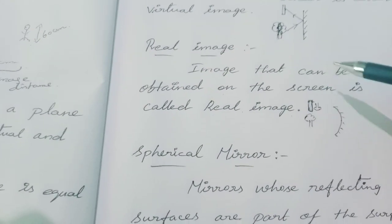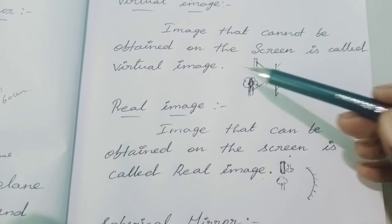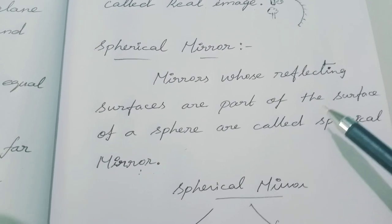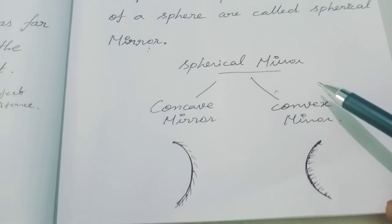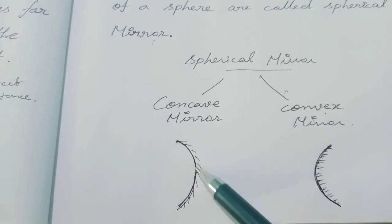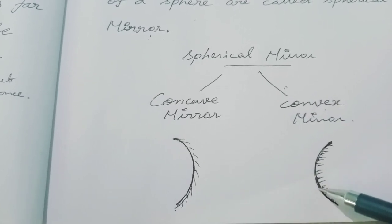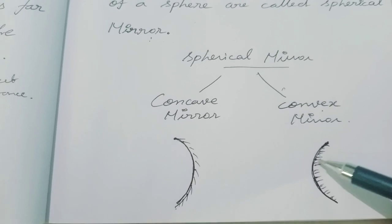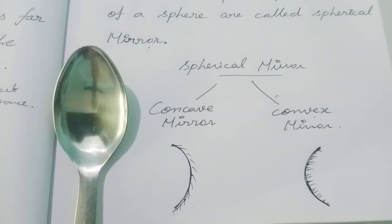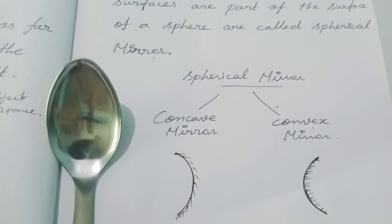To summarize: the image that can be obtained on the screen is called a real image, and the image that cannot be obtained on the screen is called a virtual image. Mirrors whose reflecting surfaces are part of the surface of a sphere are called spherical mirrors. There are two types: concave mirror and convex mirror. You can observe this clearly by considering a spoon at home. Thank you, see you in the next video.